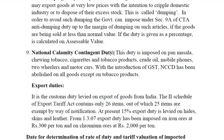National Calamity Contingency Duty: natural calamities like flood, earthquake, cyclone etc. may cause a lot of loss to people and properties. To finance rescue operations and reconstruct destroyed infrastructure, National Calamity Contingency Duty may be levied. This duty was imposed on Pan masala, chewing tobacco, cigarettes, tobacco products, crude oil, mobile phones, two-wheelers and motor cars. With the introduction of GST, National Calamity Contingency Duty has been abolished for all goods except tobacco products.